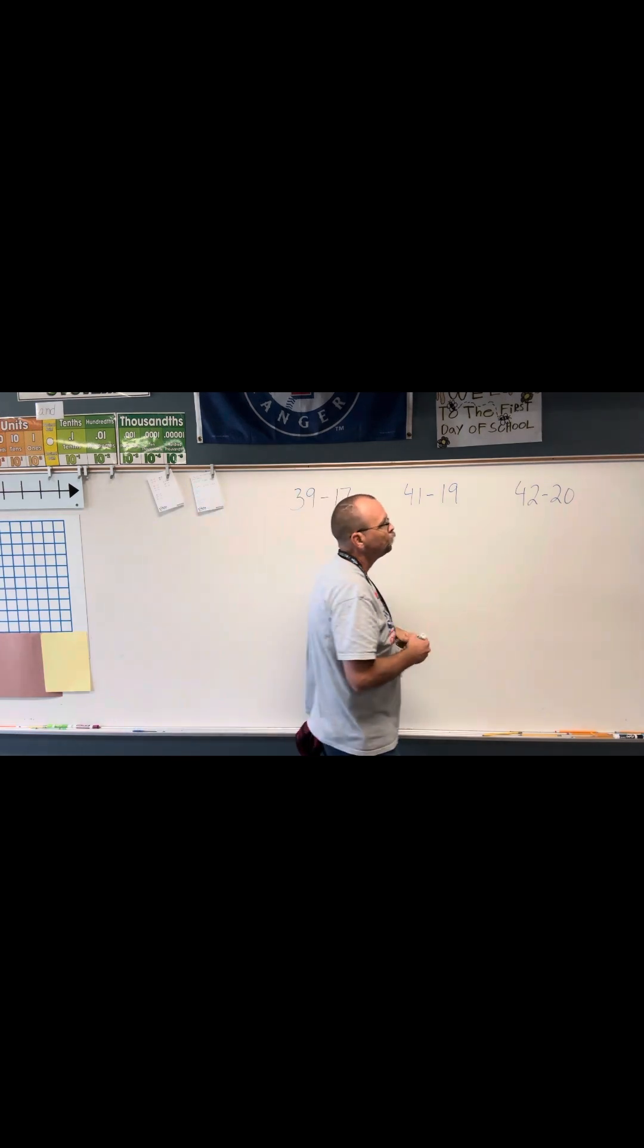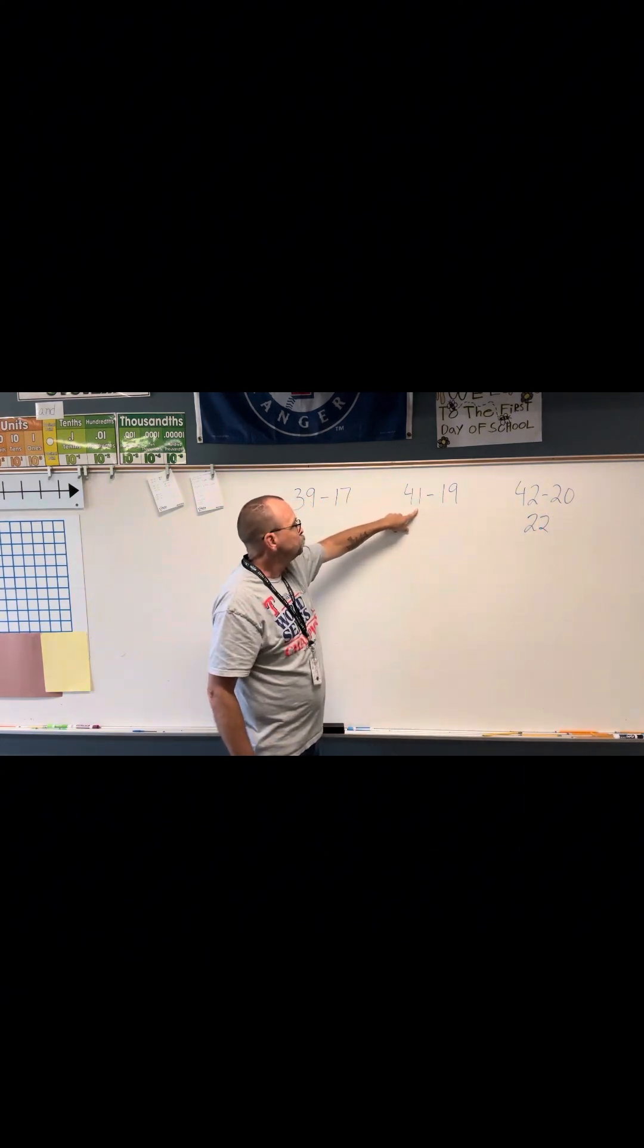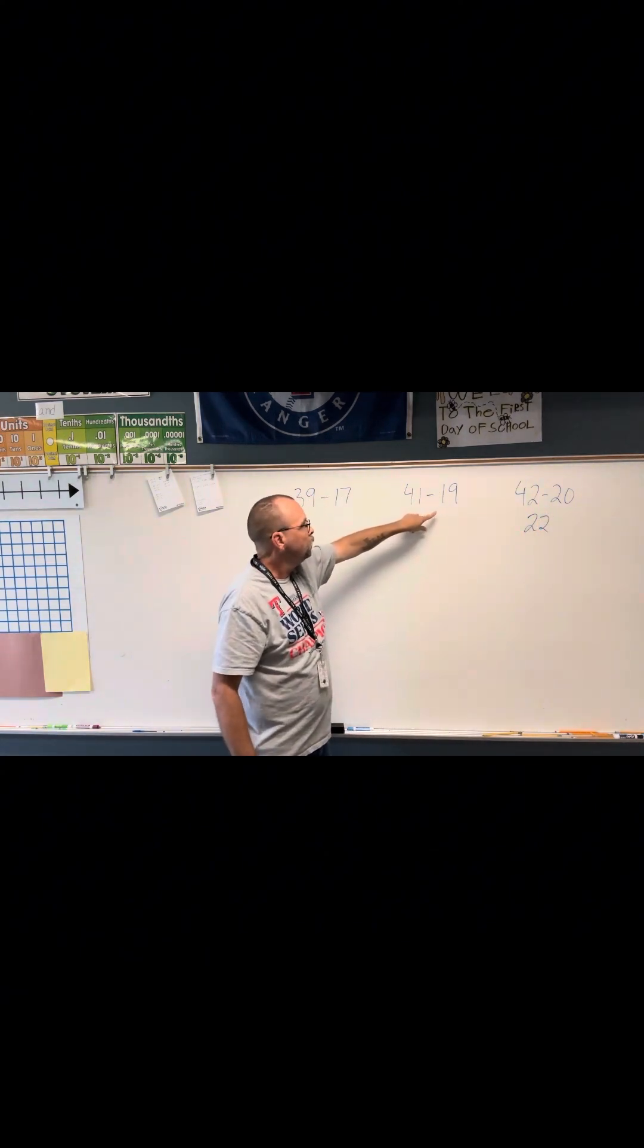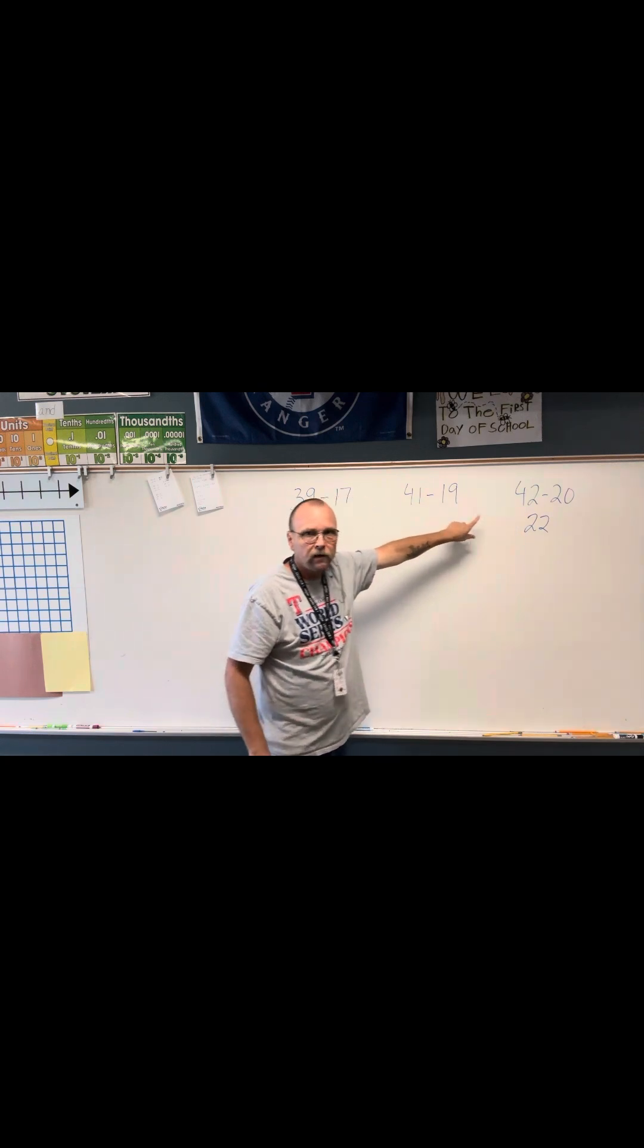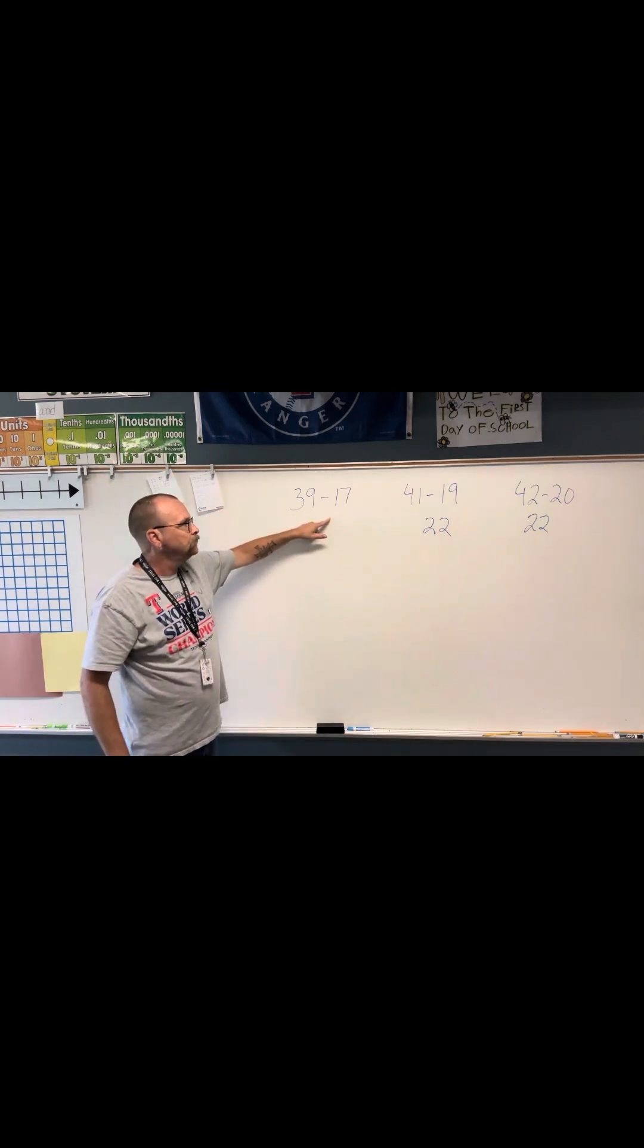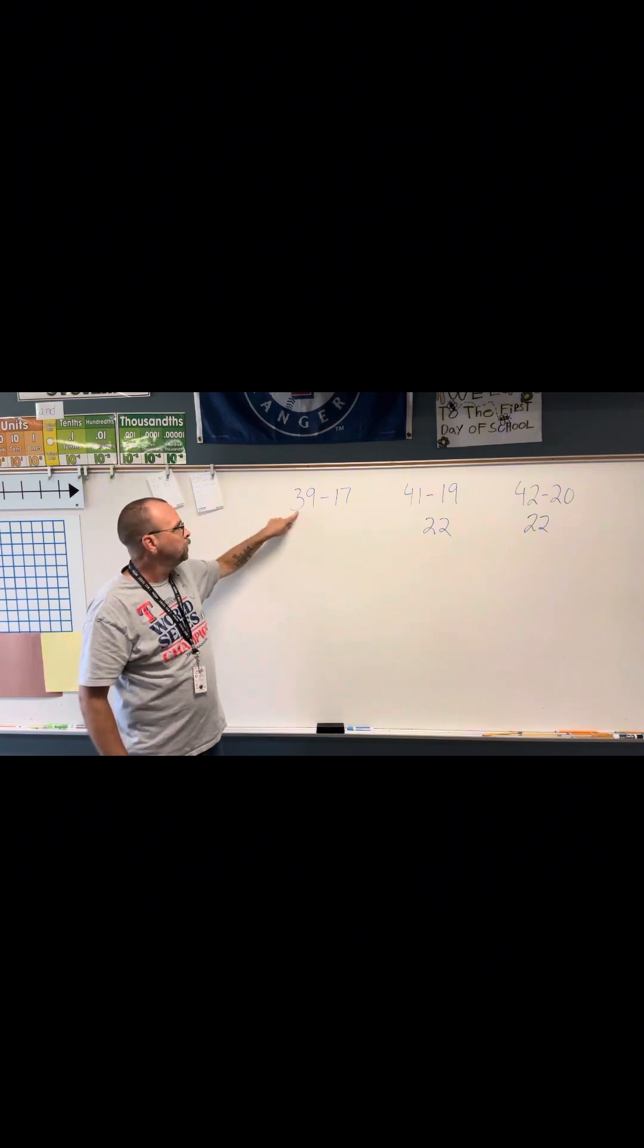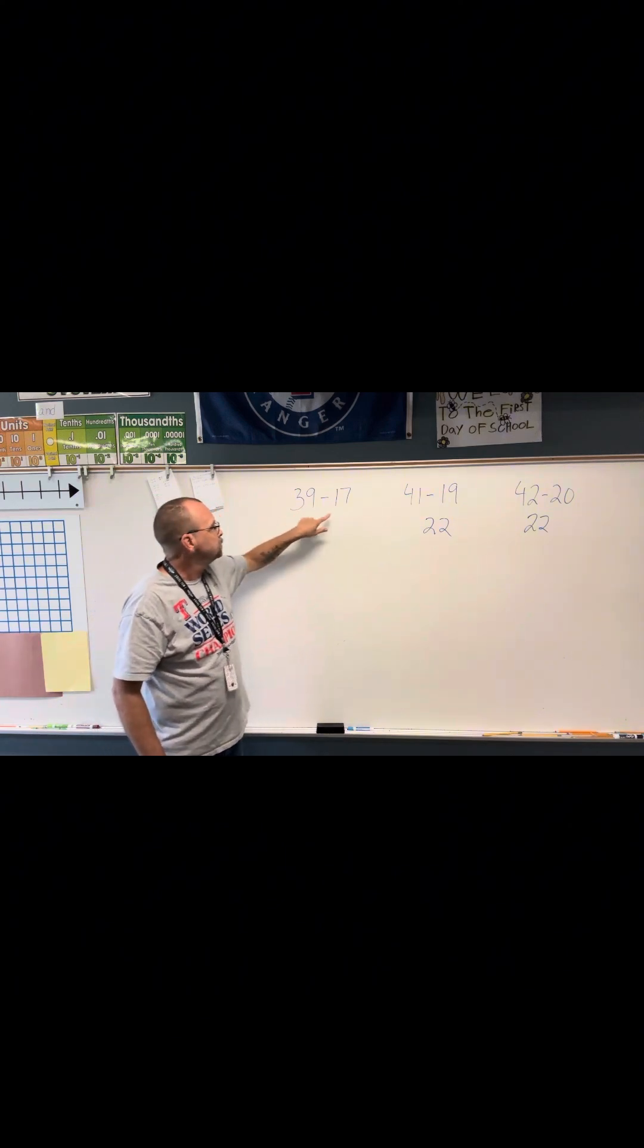So if I know 42 minus 20 is 22, that means I subtracted 1 from 42 here. I subtracted 1 from 20, so the difference stays the same. So this is going to be 22. Here I have 39 minus 17. As I said, I subtracted 3 from 42 to get 39, 3 from 20 to get 17.